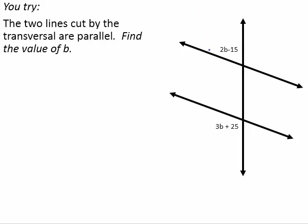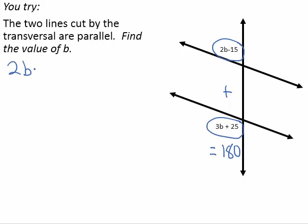For this problem, we notice that 2b minus 15 and 3b plus 25 are same-side exterior angles, which means that they are supplementary. So if you add them together, they should equal 180 degrees. So, 2b minus 15 plus 3b plus 25 is equal to 180 degrees.